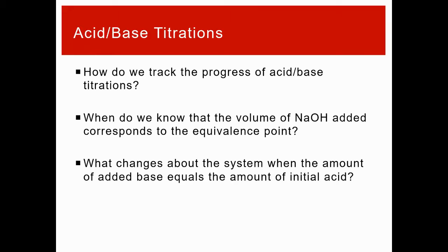To track the progress of acid-base titrations, we monitor pH. When the amount of added base equals the amount of initial acid, all the acid and base have reacted. You can always monitor acidity using pH — if you start with an acidic solution and end with a basic solution, at some point you change over through neutral pH 7. That clear-cut change is where you see the equivalence point.